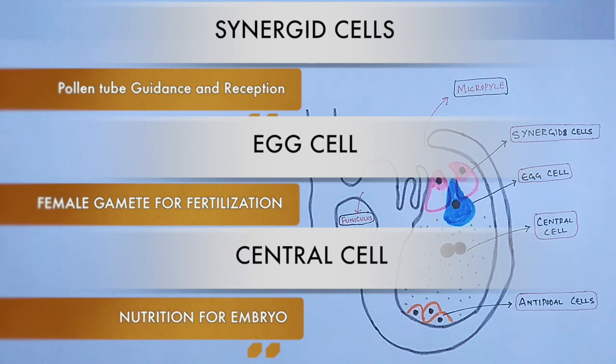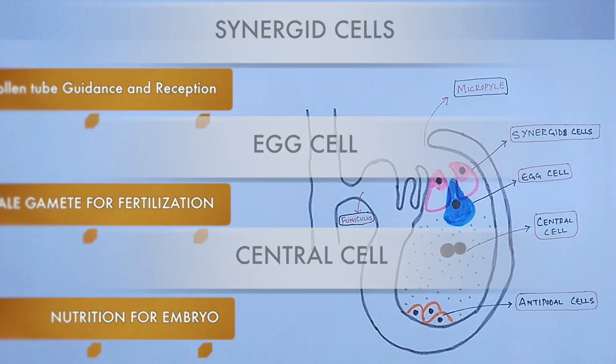Finally, we have antipodal cells, whose function remains unknown in Arabidopsis, but in the maize plant it has been observed to function as a nutritive cell for the embryo.